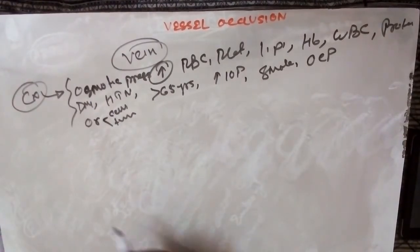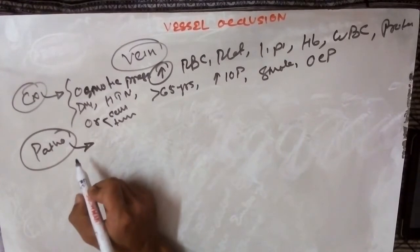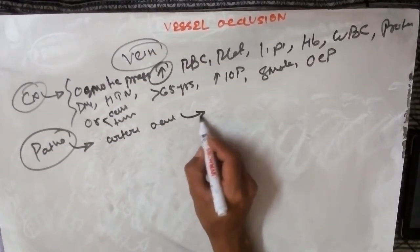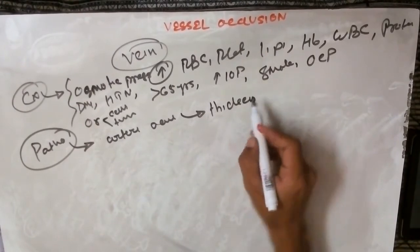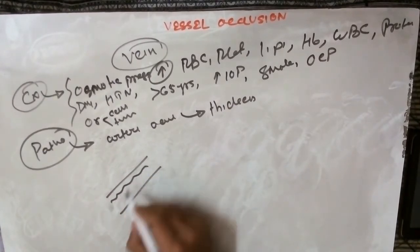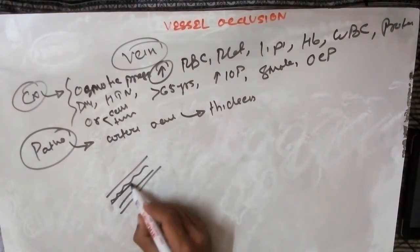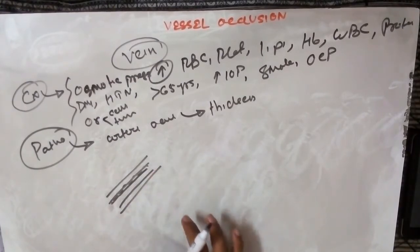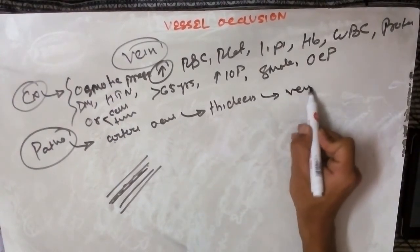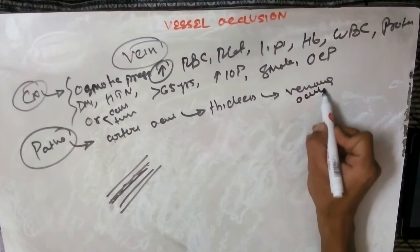The most common pathogenesis of venous occlusion is arterial thickening. The artery and vein share a common sheath. When the artery thickens — as in arterial disease — it compresses the vein within that sheath, causing venous occlusion. This is the most common pathogenesis for retinal vein occlusion.